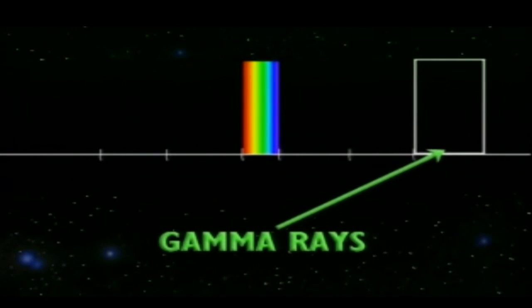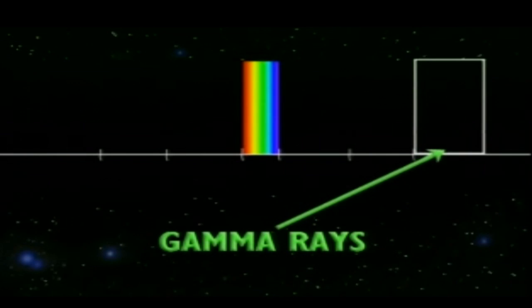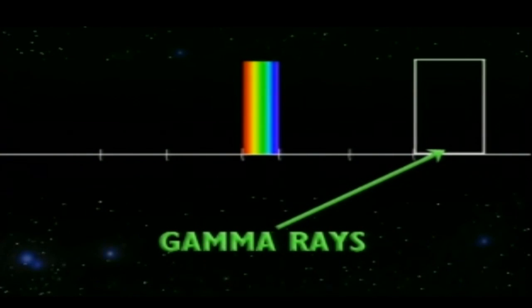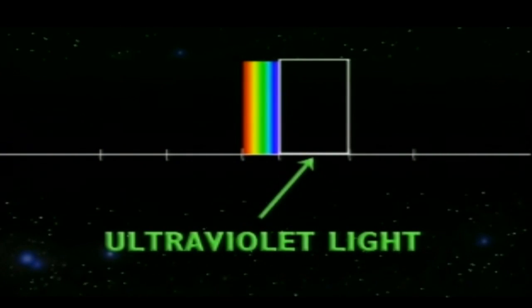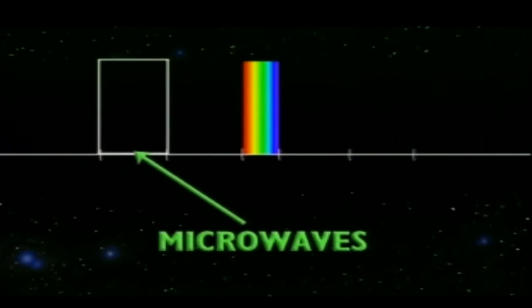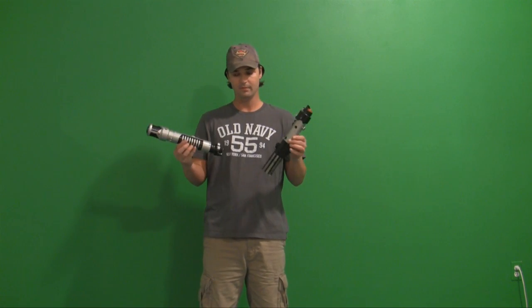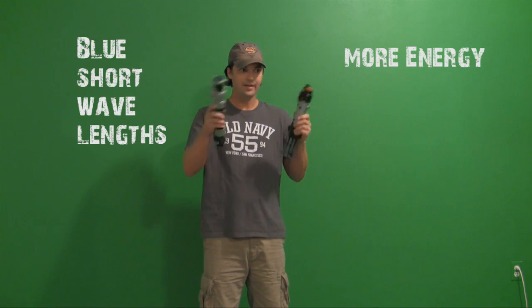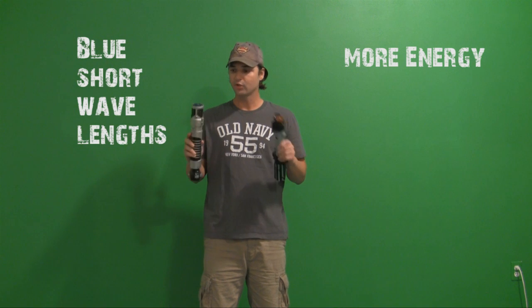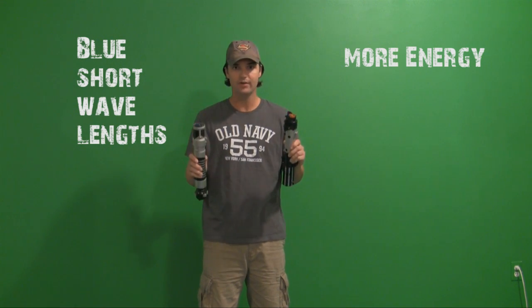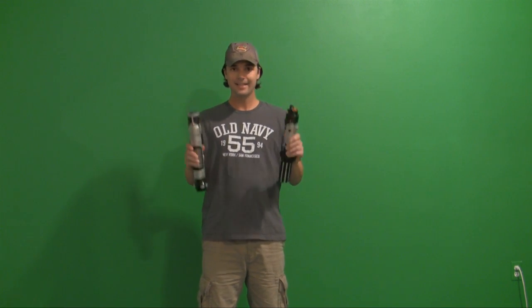On the whole spectrum, gamma rays are the strongest, but we can't see gamma rays — we can only see visible light. Then you have X-rays, ultraviolet light, visible light, infrared, microwaves, and radio. A lot of people would think red would be hotter and blue would be cooler because of how we think today — blue seems like ocean water and red like fire. But in actuality, on the visible spectrum, blue has a shorter wavelength so it has a little more energy, and red has a longer wavelength so it has less energy.